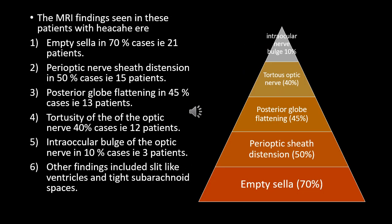The MRI findings in the study group showed empty sella as the most common finding, seen in about 70% of cases (21 patients). The second most common finding was perioptic nerve sheath distension seen in 50% of cases, followed by posterior globe flattening in 13 patients, tortuosity of the optic nerve in 12 patients (about 40%), intracranial intraocular bulge of the optic nerve in 10% of cases (3 patients), and other findings such as slit-like ventricles and tight subarachnoid spaces.